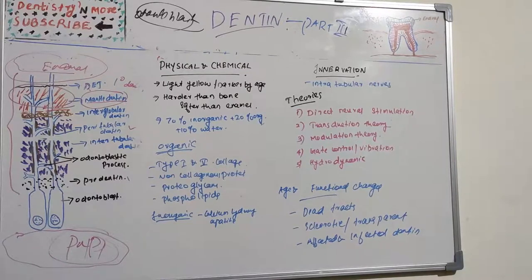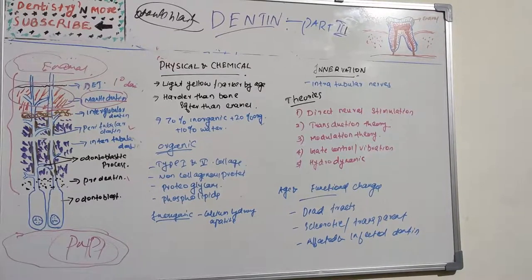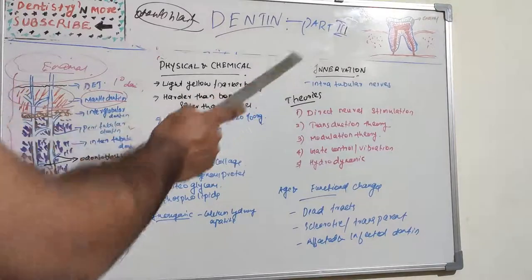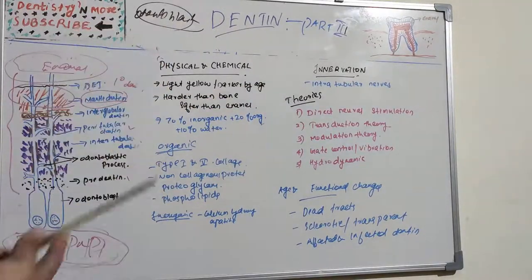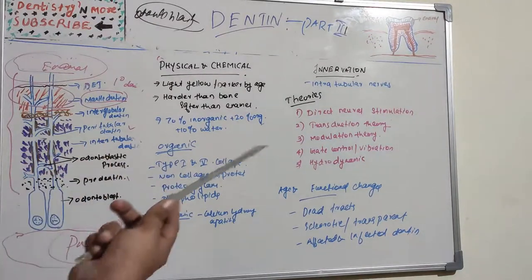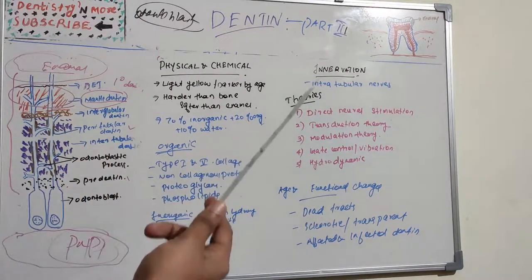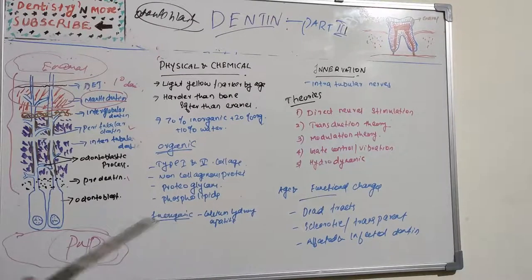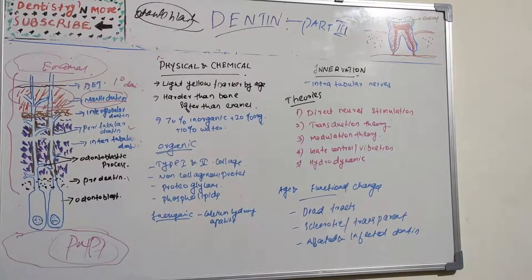Hello everyone, let's continue our sessions on dentine. This third part will cover more about physical and chemical properties, organic and inorganic content of dentine, innervation, various theories of innervation, and functional changes with age — specifically dead tracks, sclerotic transparent dentine, and affected and infected dentine.